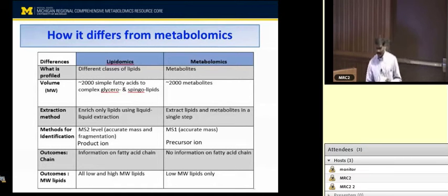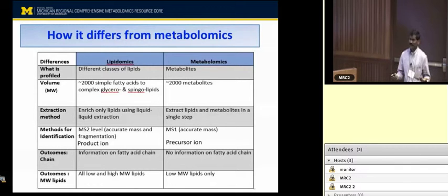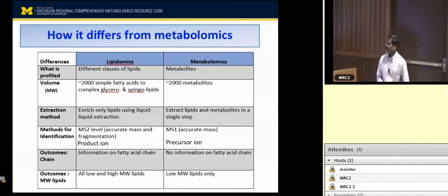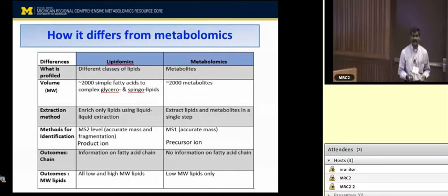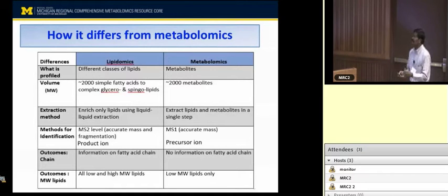Lipidomics is a subset of metabolomics. Let us see how lipidomics differs from metabolomics. Metabolomics is the identification and quantification of metabolites including lipids in biological systems, with molecular weight less than 2,000 dalton, which includes amino acids, fatty acids, sugars, vitamins, polyamines, TCA metabolites, and tryptophan metabolites like kynurenine and kynurenic acid. Lipidomics is the identification and quantification of different classes of lipids, ranging from simple free fatty acids to complex phospho- and sphingolipids. The molecular weight of lipids is also less than 2,000 dalton.